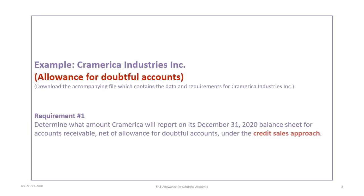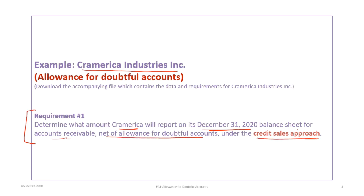This example relies on the Cramerica Industries Inc. data, so please download the accompanying file which contains the data and requirements so you can follow along. We will begin with requirement one, which is to determine the amount that Cramerica will report on its December 31st 2020 balance sheet for accounts receivable net of allowances for doubtful accounts using the credit sales approach.